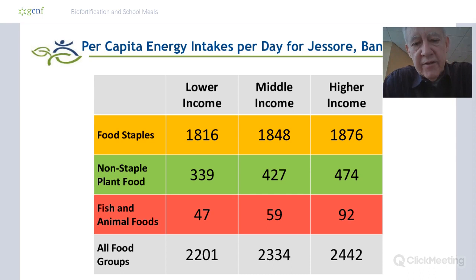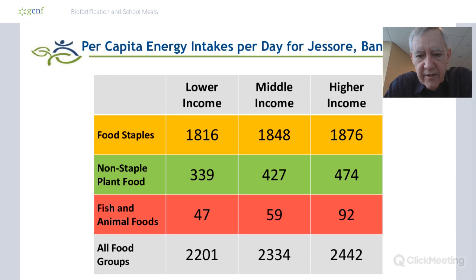The higher income people aren't really high income — they're just higher than the lower income groups. In Bangladesh, food staples means basically everyone eats rice, so rice consumption is more or less constant across income groups. The very poor spend what money they have to keep from going hungry, and they've already maximized their rice consumption.